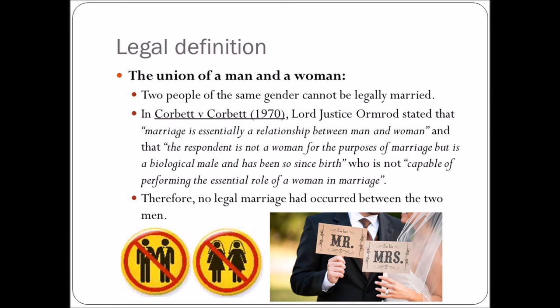So let's look at each element one by one. 'The union of a man and a woman' means two people of the same gender cannot legally be married. This is something we talk about quite a bit at the moment, because the same-sex marriage debate is based on the idea that a union is between a man and a woman — or between two adults.